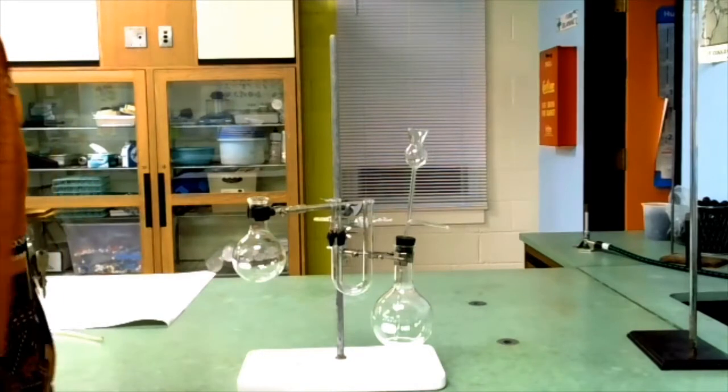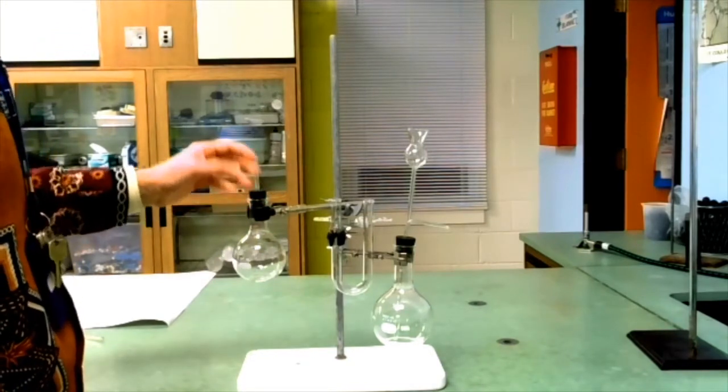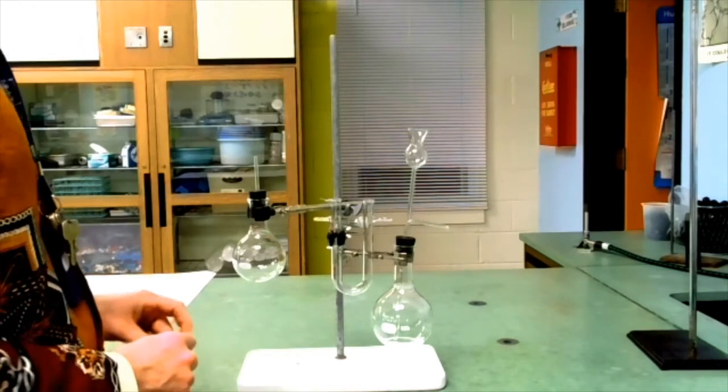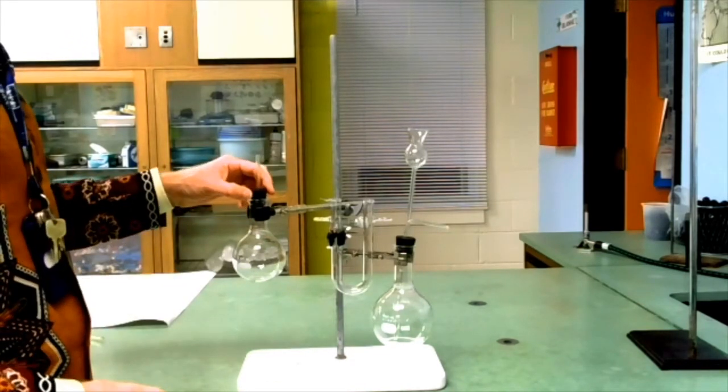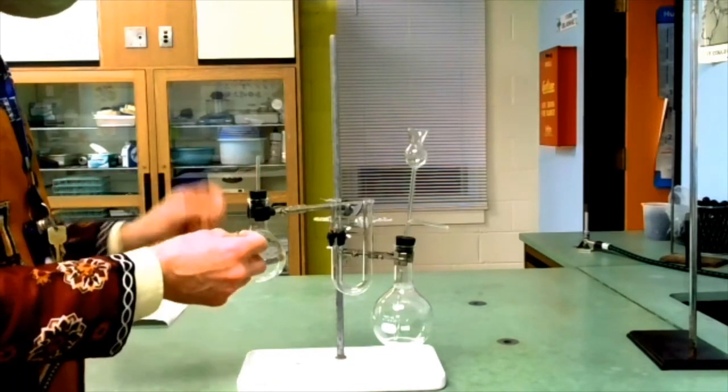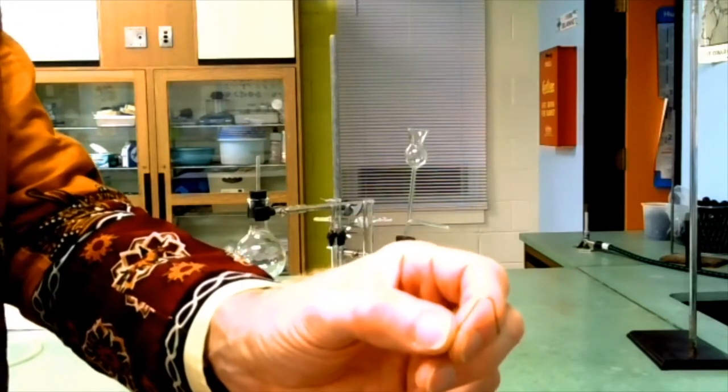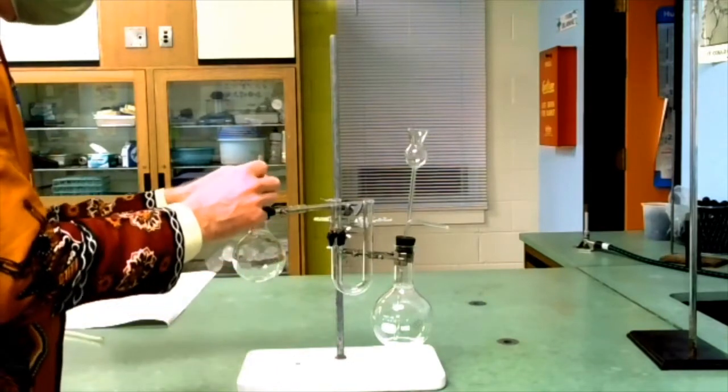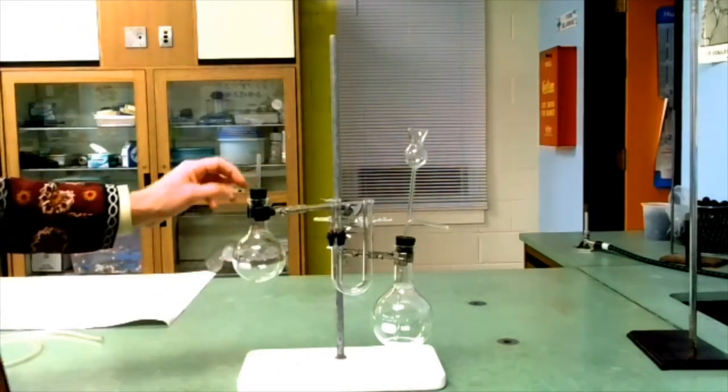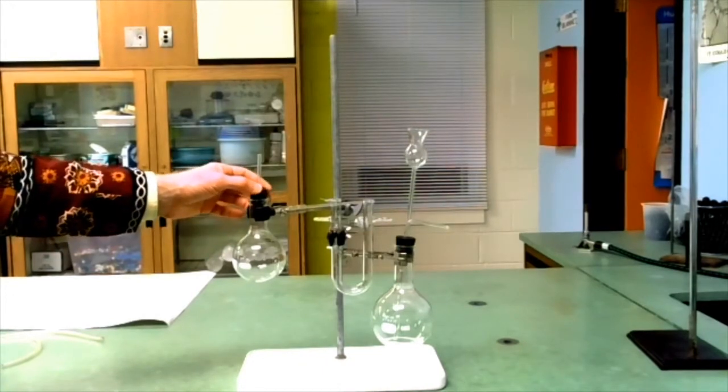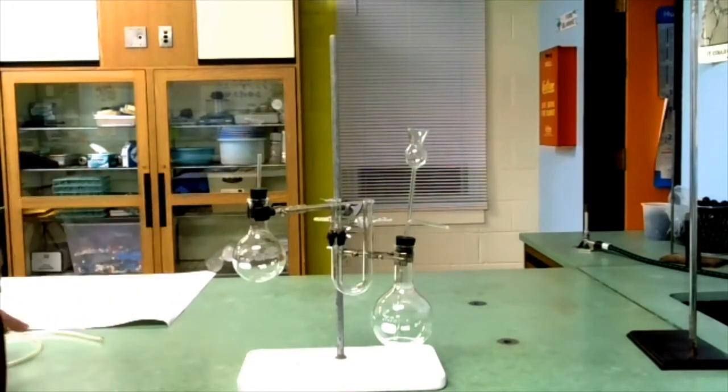The receiving flask has its own stopper. And as we'll learn, this stopper in the receiving flask should never be tight. It should be ajar. For that, I will use a piece of wire just to make sure that there is always a gap between the stopper and the flask opening itself.